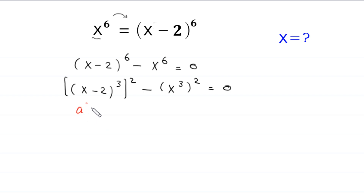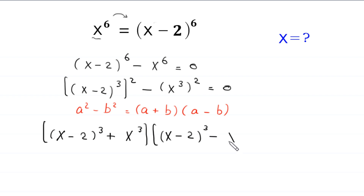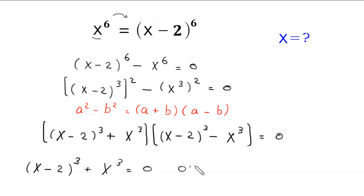So we use this algebraic identity: a squared minus b squared is equal to a plus b times a minus b. This will become x minus 2 whole cubed plus x cubed, times x minus 2 whole cubed minus x cubed, is equal to 0. From here we get two expressions: x minus 2 whole cubed plus x cubed equals 0, or x minus 2 whole cubed minus x cubed equals 0.